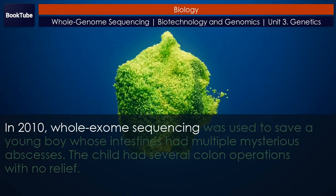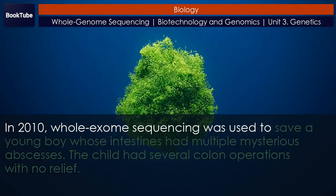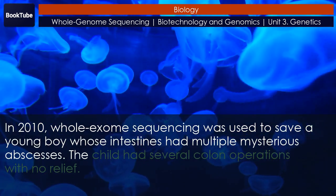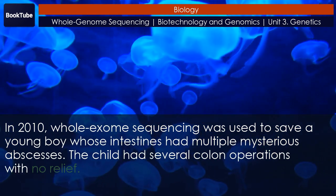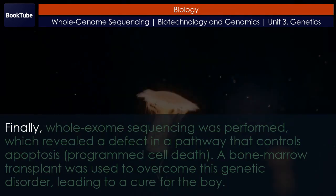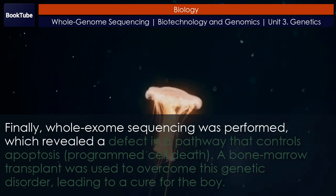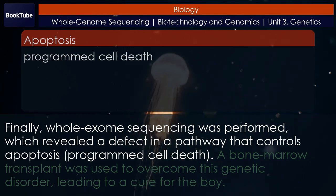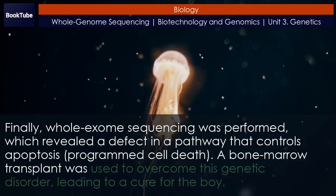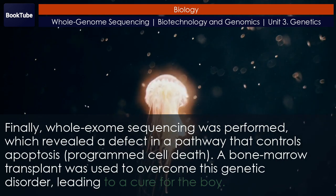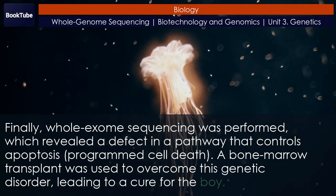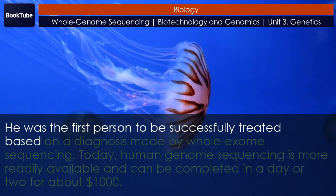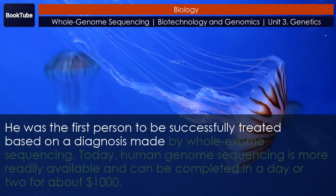In 2010, whole exome sequencing was used to save a young boy whose intestines had multiple mysterious abscesses. The child had several colon operations with no relief. Finally, whole exome sequencing was performed, which revealed a defect in a pathway that controls apoptosis — programmed cell death. A bone marrow transplant was used to overcome this genetic disorder, leading to a cure for the boy.